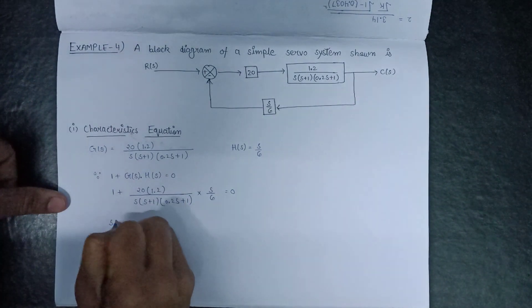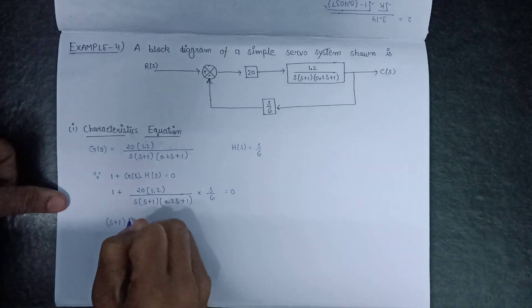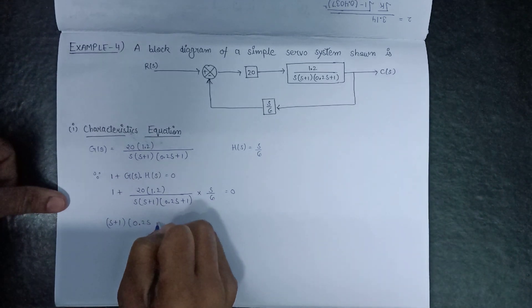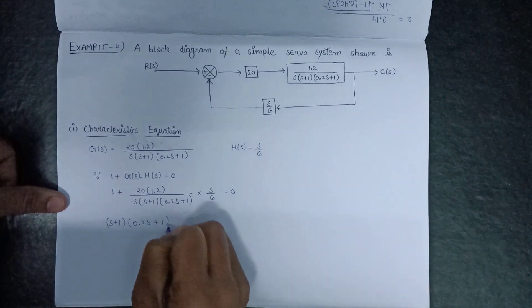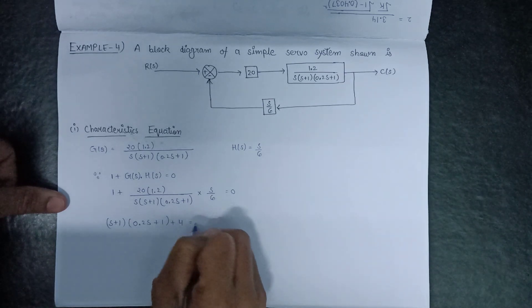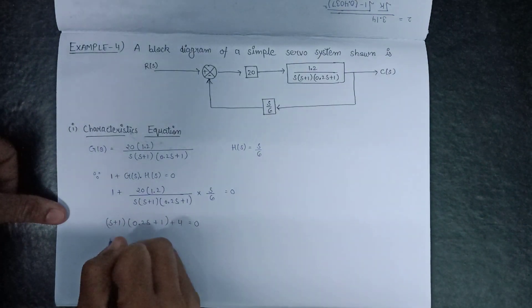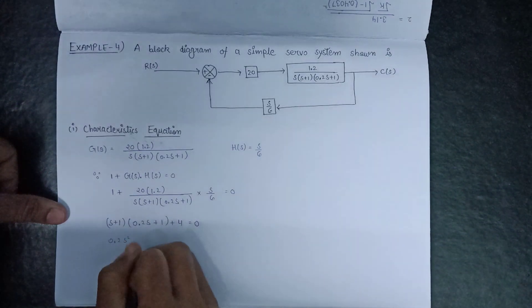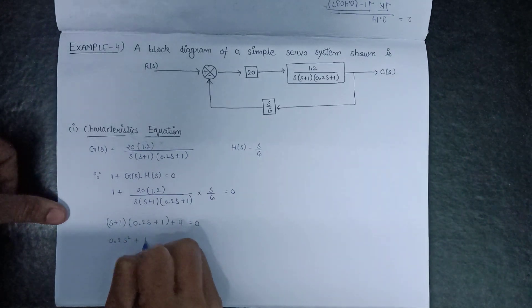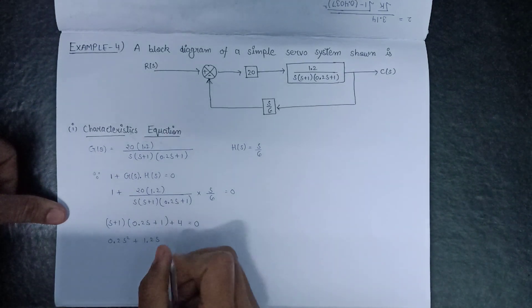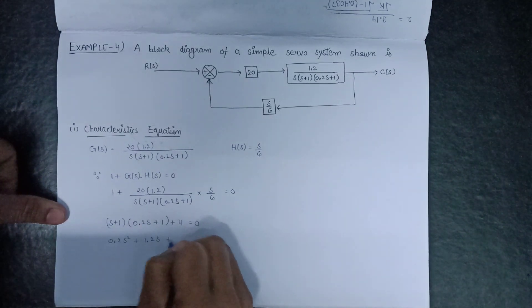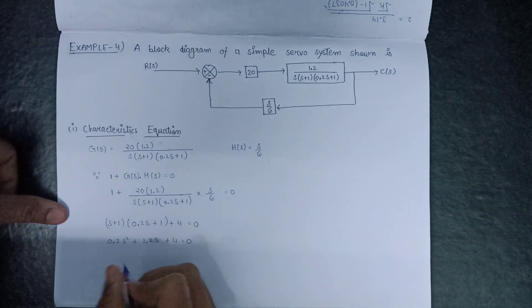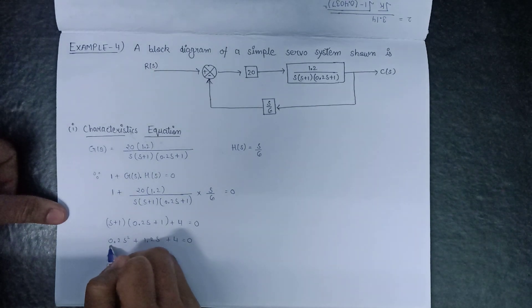After taking the LCM, we get: (s+1)(0.2s+1) + 4 = 0. Expanding, this becomes: 0.2s² + 1.2s + 1.2s + 4 = 0, which simplifies further.